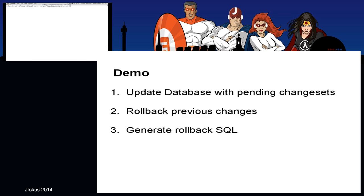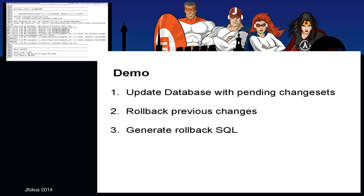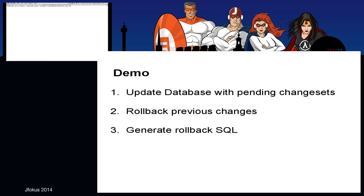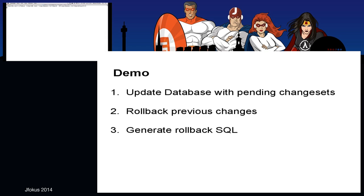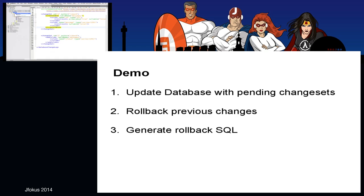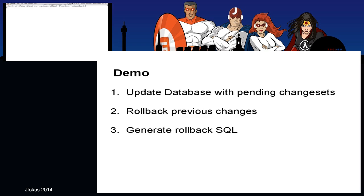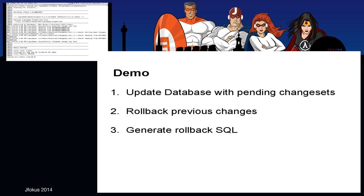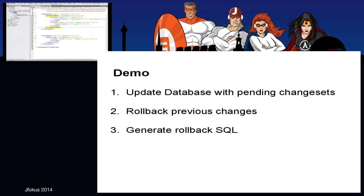Let's say I want to roll back the second changeset. I tell Liquibase to output only the SQL for that rollback statement — and remember, this SQL was generated automatically by Liquibase; I didn't write it. Once I'm confident it's correct, I tell Liquibase to actually roll back that last changeset. Heading back and refreshing, you can see the last column is gone.